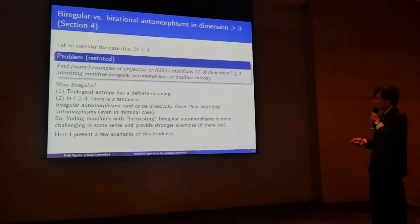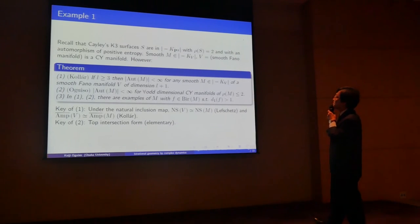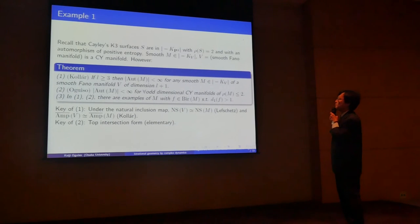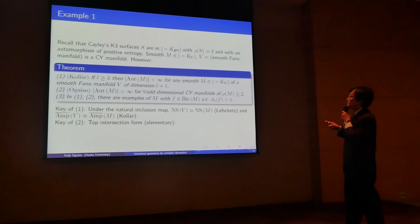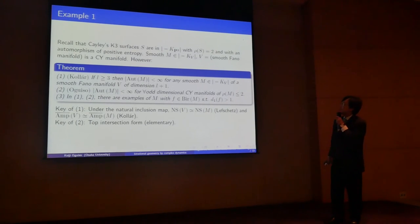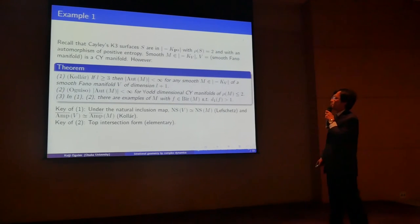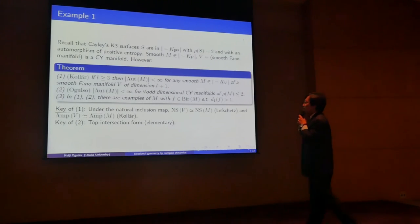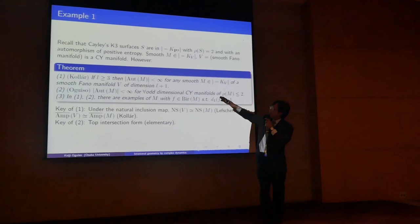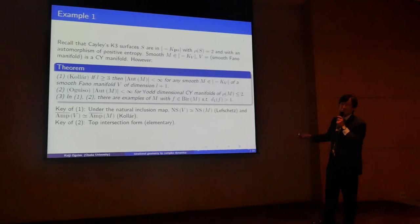First, recall that Cayley's K3 surface is an anti-canonical member with Picard number two, with an automorphism of positive entropy, hence primitive. The natural generalization is to consider a smooth anti-canonical member of a Fano manifold — this is a Calabi-Yau manifold in the strict sense. However, Professor Beauville shows that if dimension is greater than or equal to three, then the automorphism group is always finite. So this is completely different from the surface case. The reason: this kind of argument is also true for K3 surfaces if M is chosen to be generic.